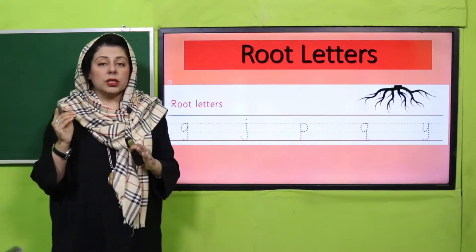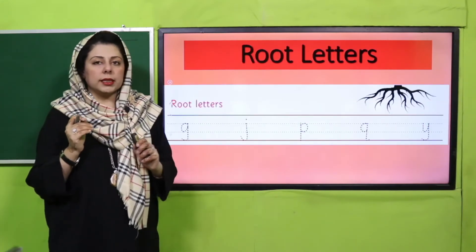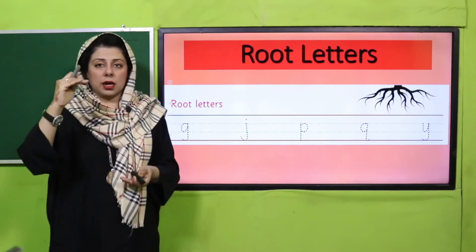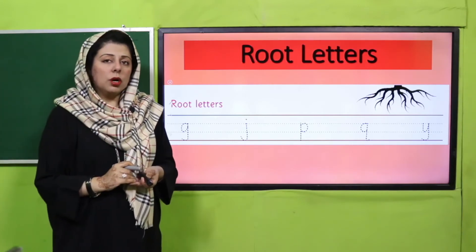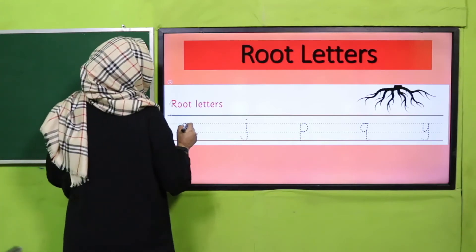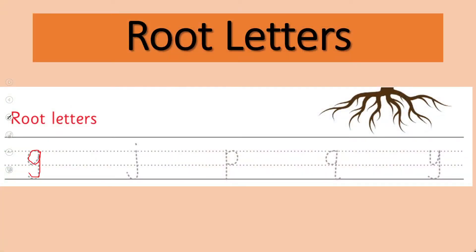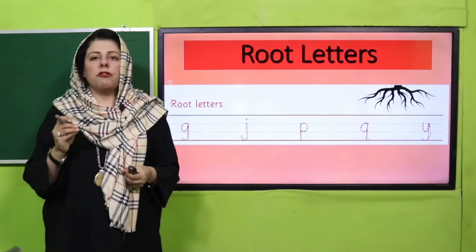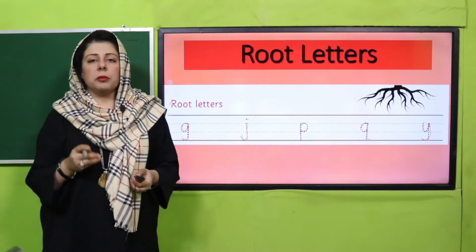One last type of letters remains, and those are called the root letters. Sky, grass, and now let's revise root letters. Root letters are: small letter g, small letter j, small letter p, small letter q, and small letter y. Shabash, well done!